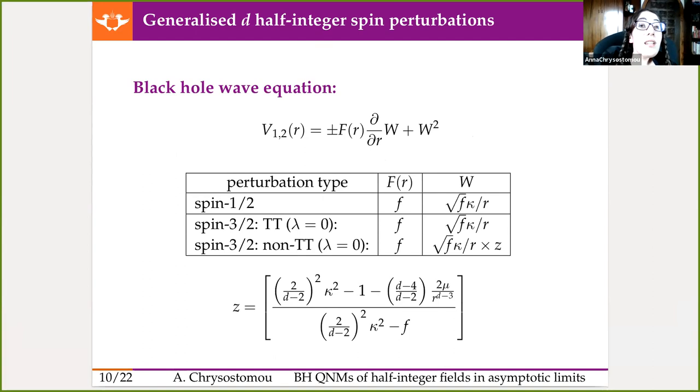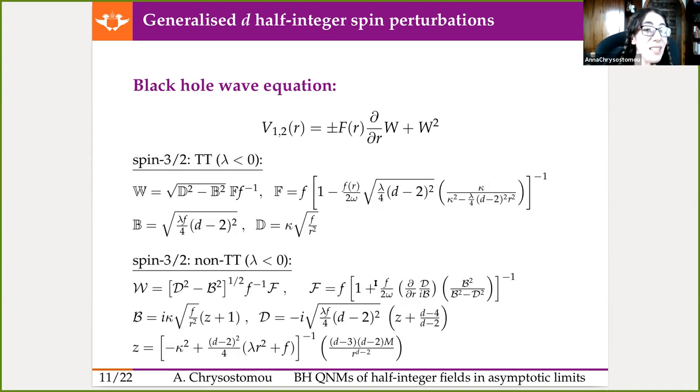Here we have, for the Schwarzschild space-time, a very neat super potential form, right? And for the spin half or Dirac field, we find that it's related to the metric function, kappa, which is a parametrization of our angular momentum and the radial component. For the transverse traceless form of the spin 3/2 fields, we find the same expression. However, when we get into the non-transverse traceless form, things get a little more complicated. Should we go to more complex spacetimes? Well, it gets a bit worse. However, we did find something very interesting.